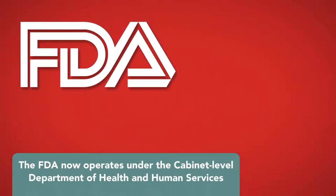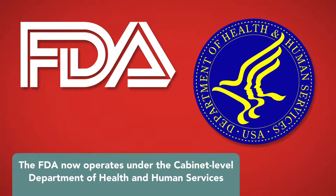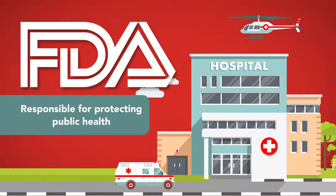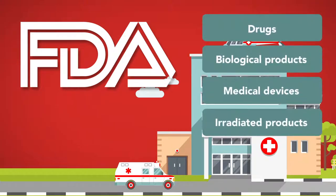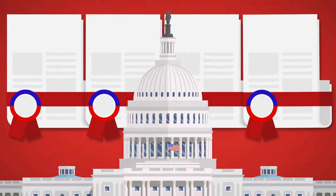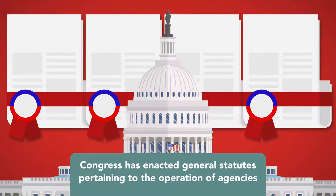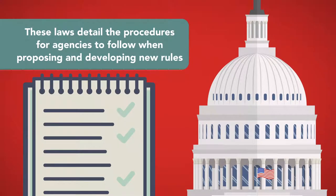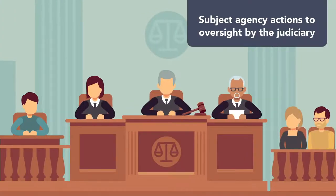After many subsequent amendments, the FDA now operates under the Cabinet-level Department of Health and Human Services, and is responsible for protecting public health by ensuring the safety of drugs, biological products, medical devices, and products that emit radiation, in addition to ensuring and protecting the nation's food supply. In addition to laws governing specific agencies, Congress has enacted general statutes pertaining to the operation of agencies within the administrative structure as a whole. These laws detail the procedures for agencies to follow when proposing and developing new rules, and subject agency actions to oversight by the judiciary.